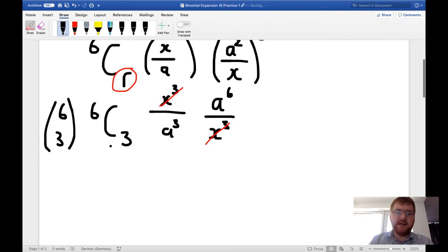So if I scroll down, 6 choose 3, so if we do that on the calculator, which I've got here, yep, good, we get the answer of 20. So this binomial coefficient, 6 choose 3, becomes 20.